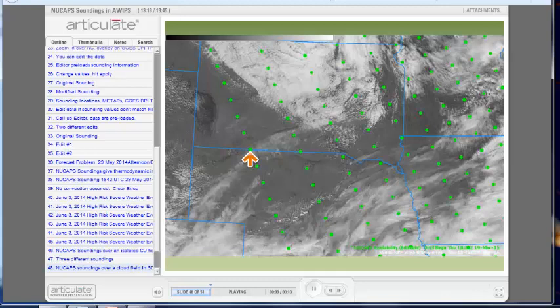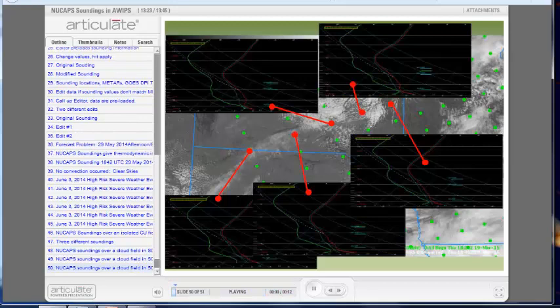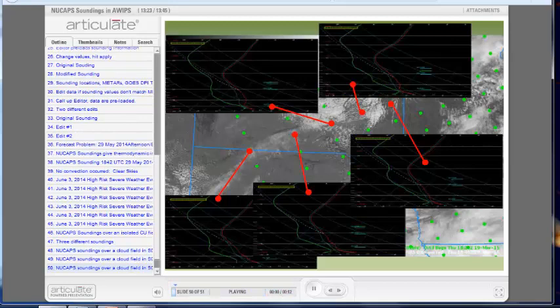Here is another example of NuCAP soundings that span a cloud field. We'll be looking along the southern edge of these clouds over South Dakota. That is, we'll look at these five soundings. There are subtle, noticeable differences between soundings in clear and cloudy regions. NuCAP's data can provide useful information for a forecaster to interpret with care.